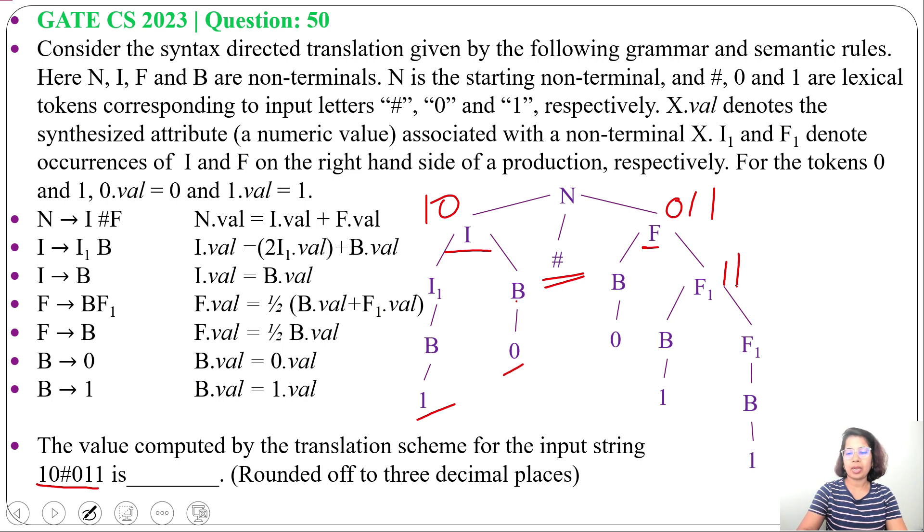Now, we got 1, 0, #0, 1, 1. So, syntax tree is done for 1, 0, #0, 1, 1. Next, we will apply this semantic rules. We will apply it bottom to top and left to right.